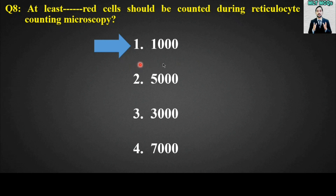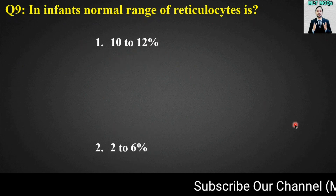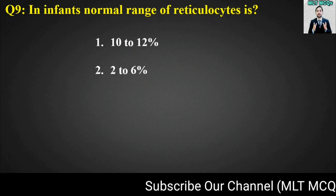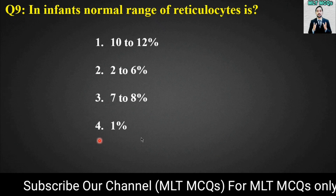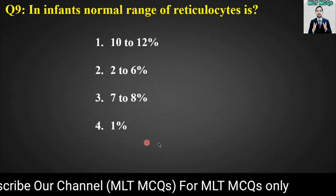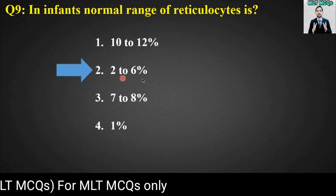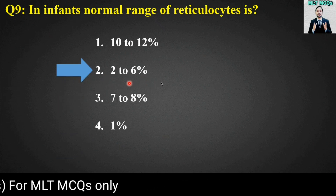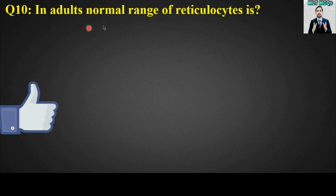MCQ number nine: In infants, the normal range of reticulocytes is — options are: 10 to 12 percent, 2 to 6 percent, 7 to 8 percent, or 1 percent. The right answer is option number two — in infants, the normal range of reticulocytes is 2 to 6 percent.